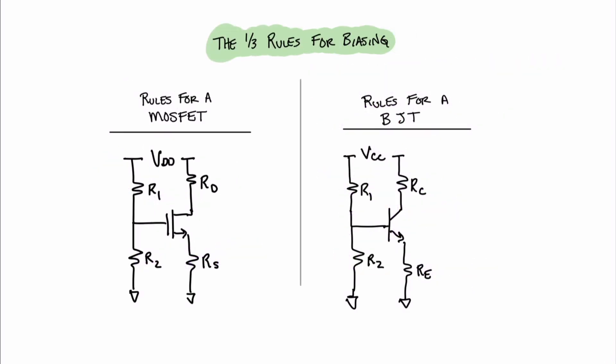How do we design the biasing for a transistor circuit when we're not given the information like we were in the previous example? In this case, we can rely on something that we call the 1 third rules for biasing. What are these 1 third rules for biasing? Great question. Let me show you. First, let me show you for the MOSFET circuit. In this case, we simply want to produce a 1 third drop across the drain resistor, the MOSFET, and the source resistor.